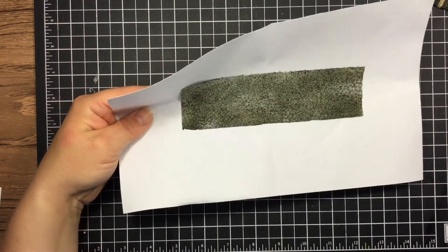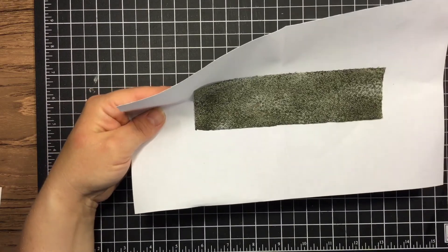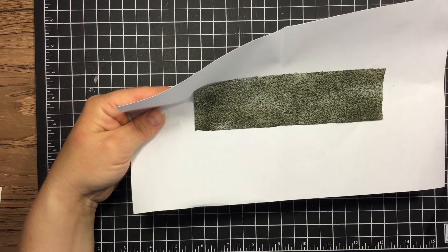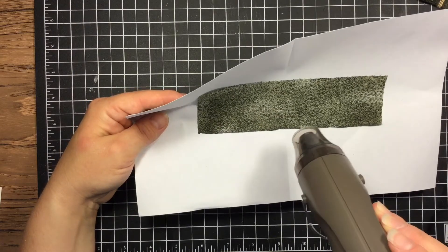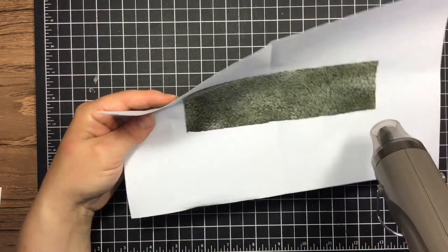You also want to make sure that before you take your heat tool to the paper towel that you get it good and hot. That'll also help it to melt quickly so it doesn't blow off before you get a chance to really get it melted.